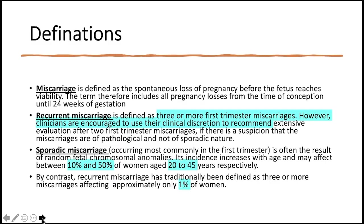The definition of miscarriage, as you all know, is loss before 24 weeks of gestation. Recurrent miscarriages are defined as three or more first-trimester miscarriages. Sporadic miscarriages are usually due to random fetal chromosomal abnormalities, and their incidence increases with increasing age. The incidence of recurrent miscarriages is about one percent of women.